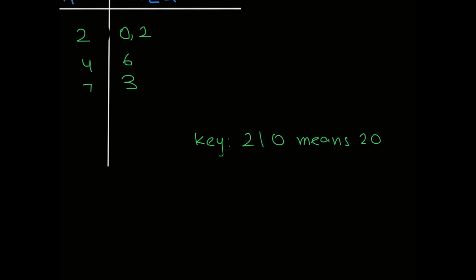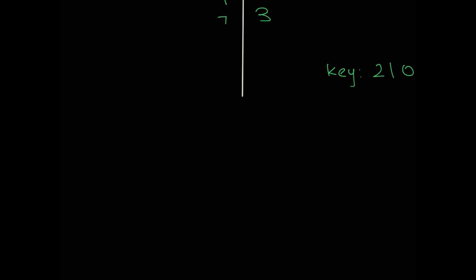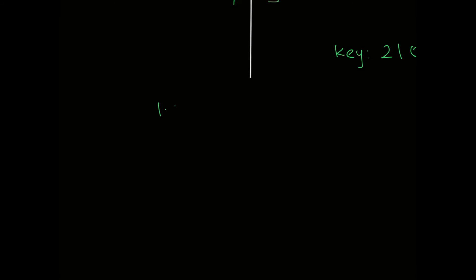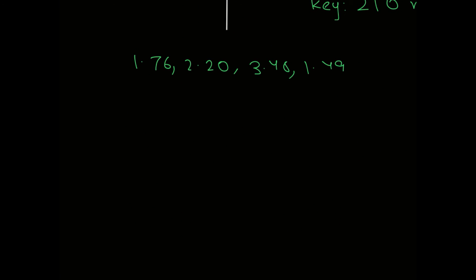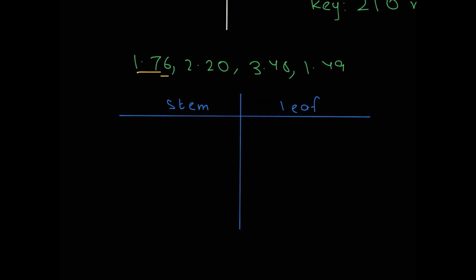What if we had a data set with decimal values, for example: 1.76, 2.20, 3.48, 1.49? Since we can only write one digit in the leaf section, we write the last digit in the leaf section, and the first two digits go in the stem section. Since we can't write 1.7 in the stem, we instead write 17.